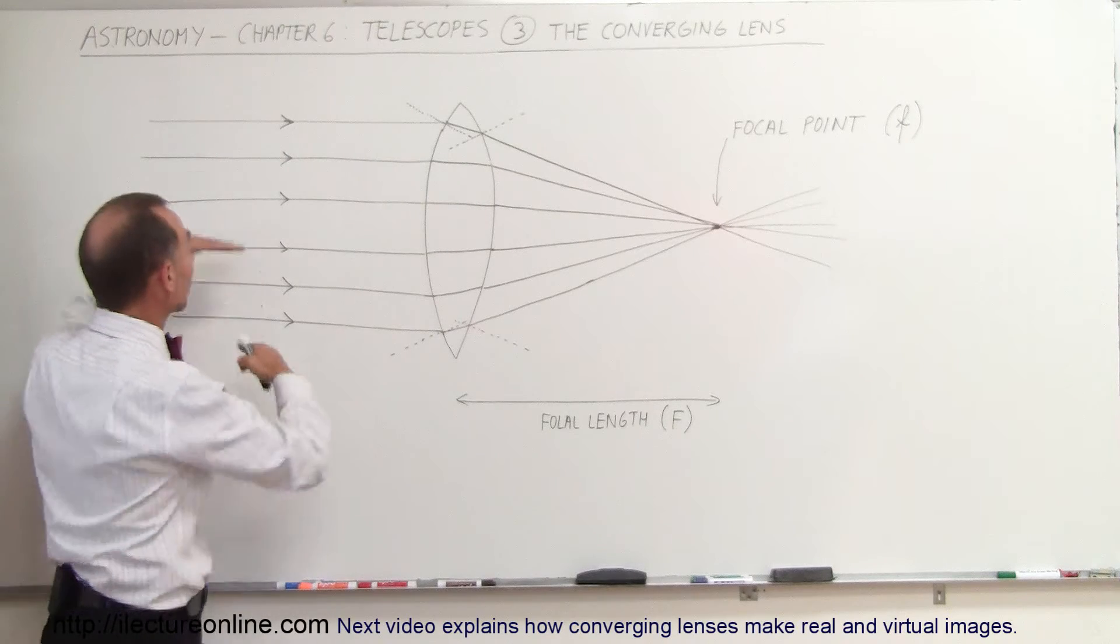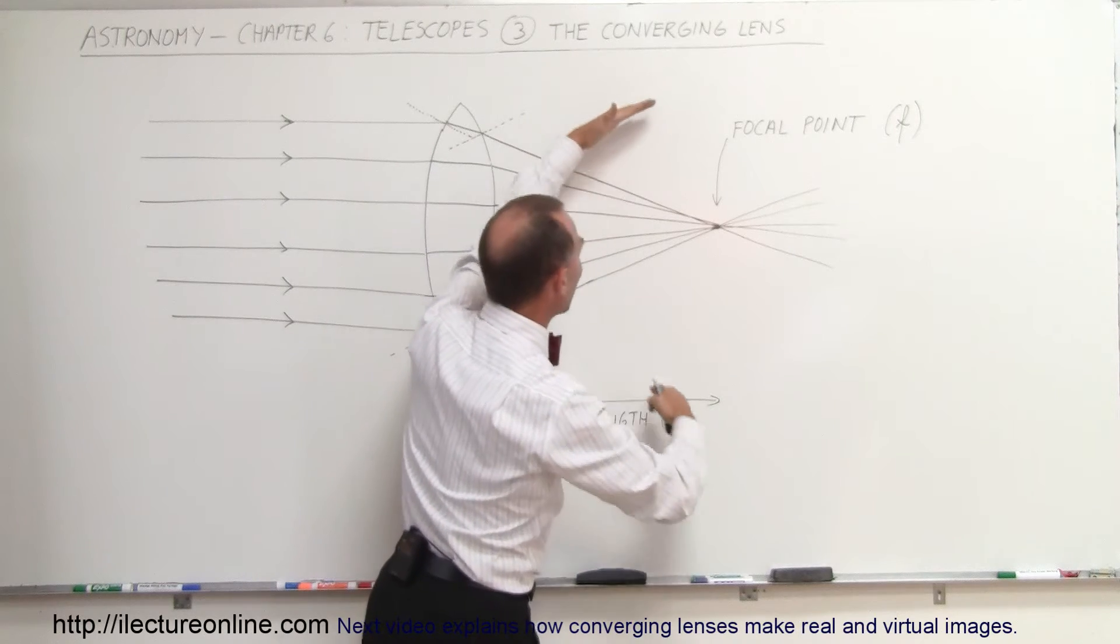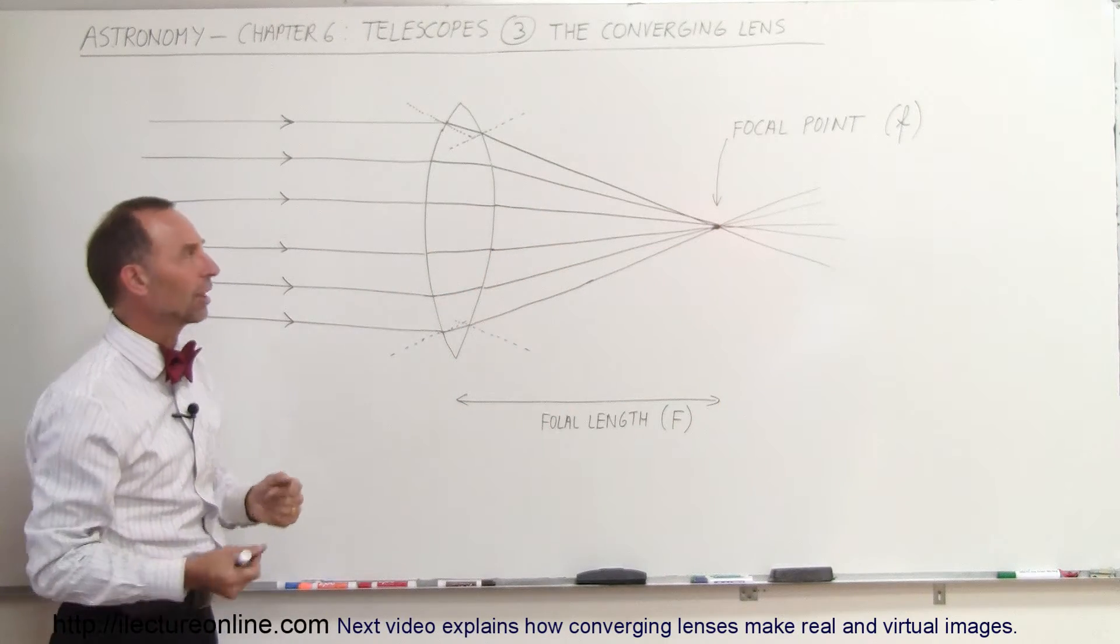Diverging lenses are where the rays come in parallel. When they go to the lens, they will move away from the lens, they move away from each other, so they diverge. That's called the diverging lens.